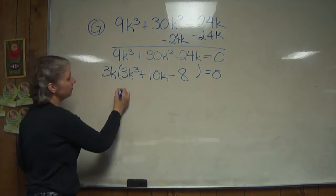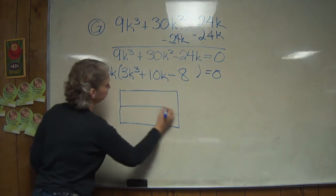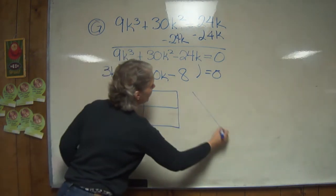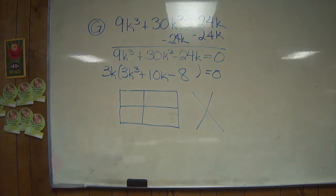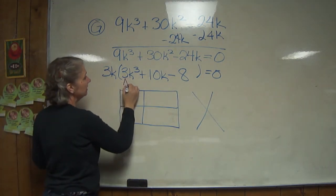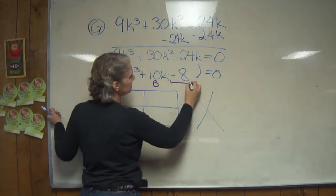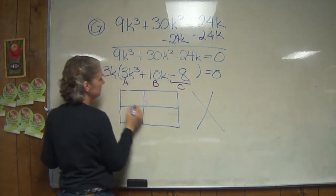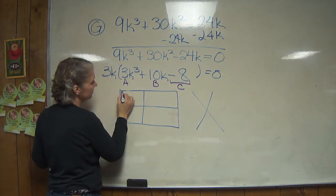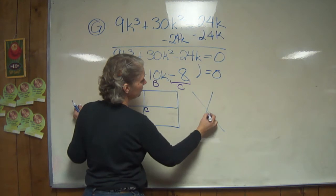Now we're going to use the box and a diamond. Now one thing about the box and the diamond is you have to remember - this is a, this is b, and the negative 8 is c.